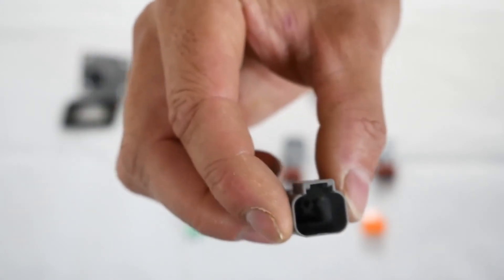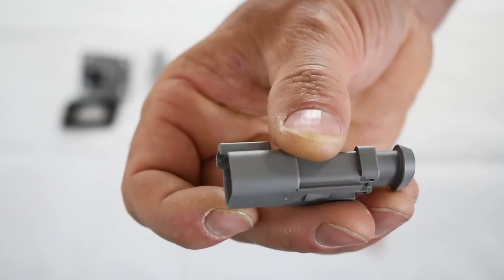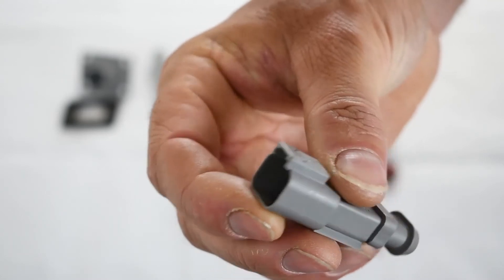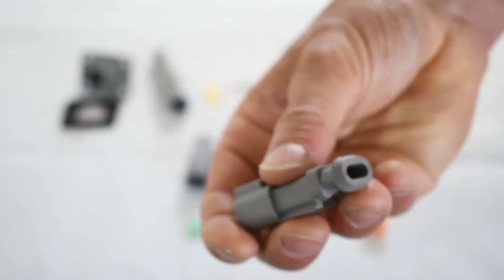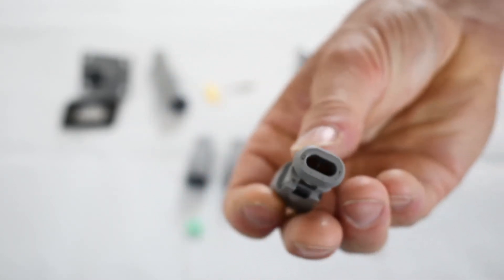On the same side, on the receptacle, again, we have this extension here. You can slide heat shrink up and seal it off. Add it on to your wiring harness.